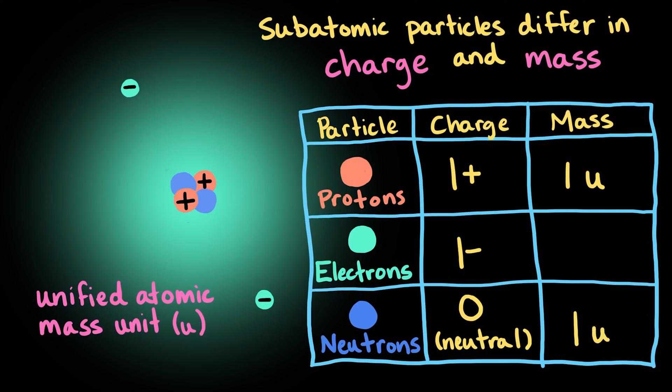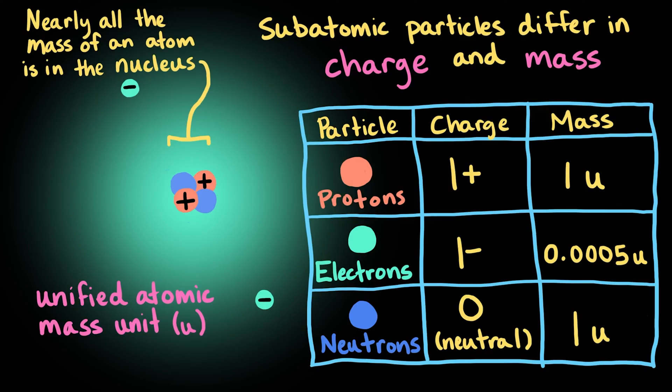In comparison, electrons have a mass of about 0.0005U, which makes them roughly 2,000 times smaller than either a proton or a neutron. This means that nearly all the mass of an atom resides in the nucleus, and not in the electron cloud.